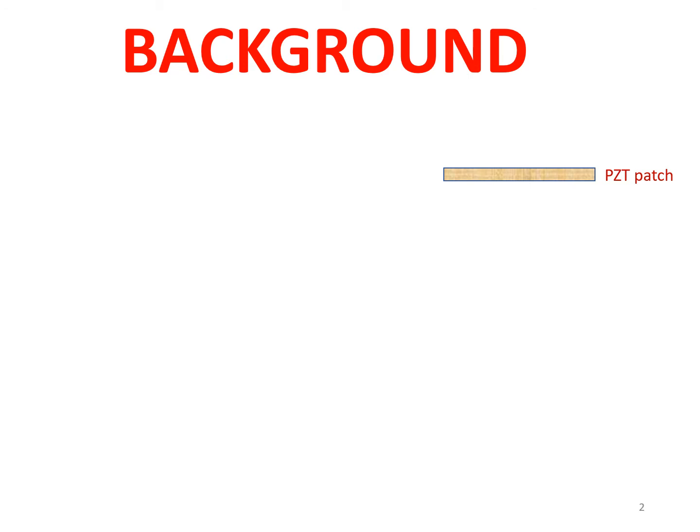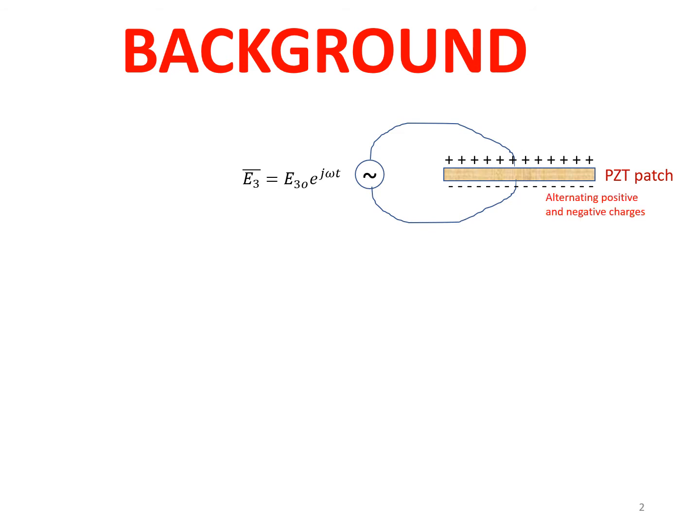Let us recapitulate: if we have a PZT patch and we apply an alternating electric field across the thickness, shown by the tilde symbol inside a circle, there will be alternating charges. The top side is positive and the bottom side is negative, but it keeps fluctuating. Such alternating quantities are shown by a bar on the top, indicating the instantaneous value. We will show the current, electric field, and voltage by this symbol.